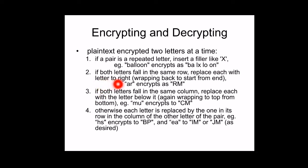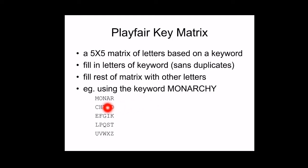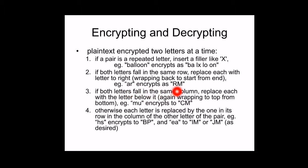Rule 2: If both plaintext characters fall in the same row, replace each with the next letter to the right. For example, take A-R — both are in the same row. For A, the next character is R; for R, there is no next character, so wrap around to M. Therefore A-R is encrypted as R-M.